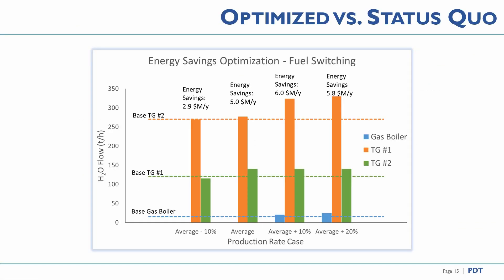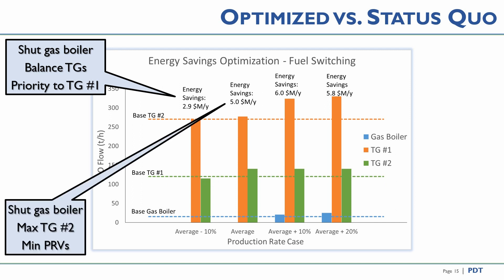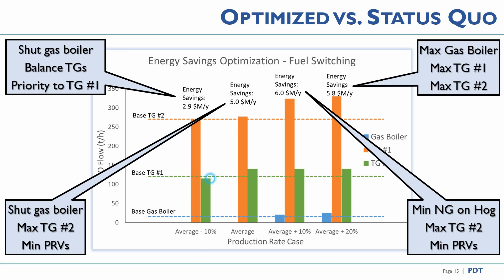This important slide shows the complexity of the problem and the energy savings that can be gained with four different production rates. The horizontal dashed lines indicate where the power systems can operate successfully without changes as production changes, but money is left on the table. Each different production rate has a different optimal solution. At low production rate we should shut the gas boiler and give priority to the condensing turbine. At average production rate — similar to the case I just demonstrated — we minimize natural gas on the hog boiler, maximize turbo generator 2, and minimize pressure reducing valves. At higher production rates we maximize the gas boiler and put more through the PRVs while maximizing the turbo generator.